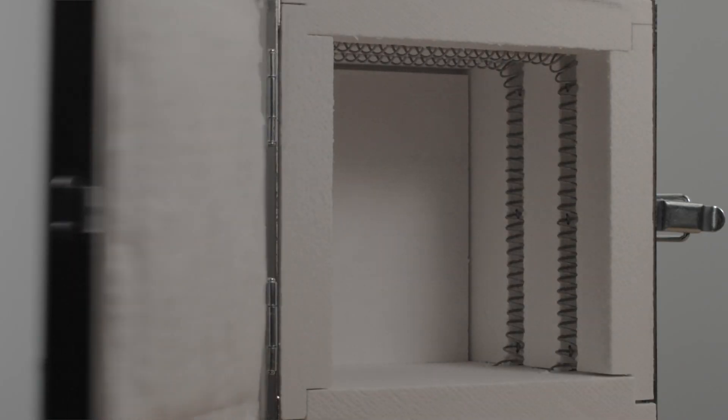After you complete your burn-off procedure, you'll notice the inside of your kiln is going to basically turn black. Don't worry, that's also normal. After one or two more uses it will turn back to white.